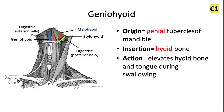The geniohyoid muscle is innervated by the cervical spinal nerve 1. It originates from the genial tubercles of the mandible. I'm going to be including the parts of the word in red that inform how the name comes about — the name has to do with where they're originating and where they're inserting.